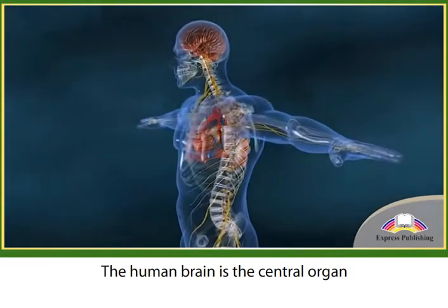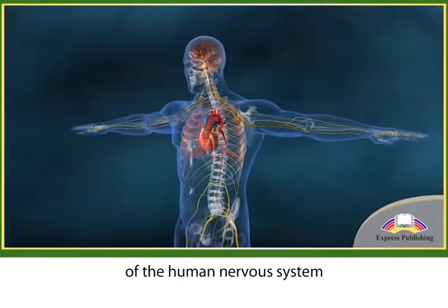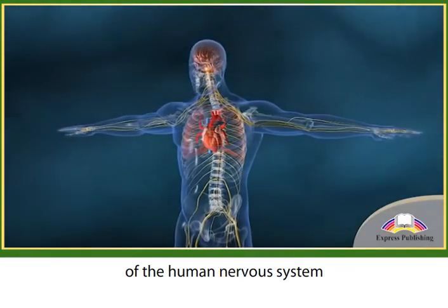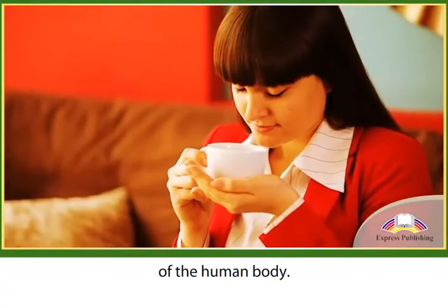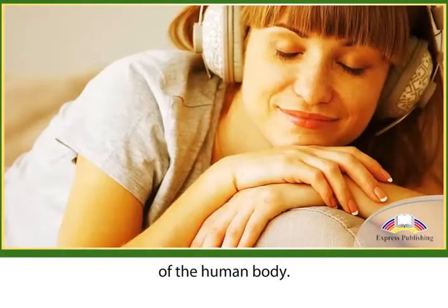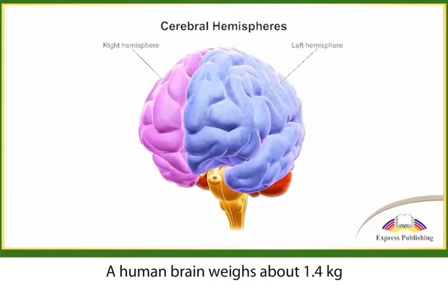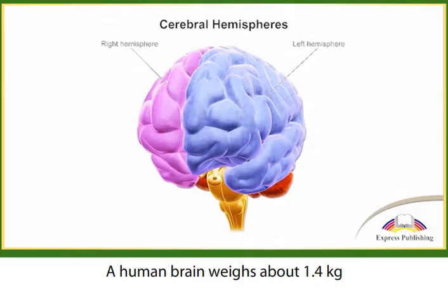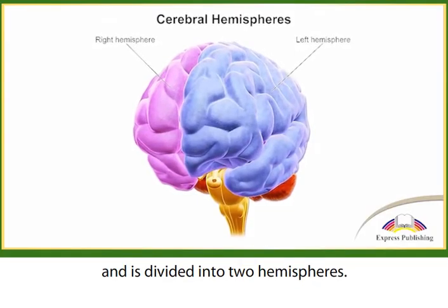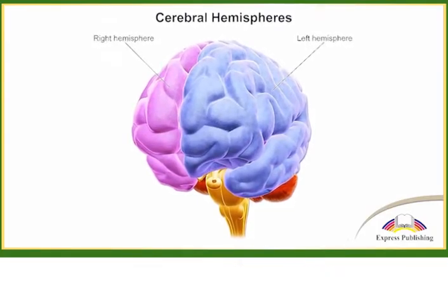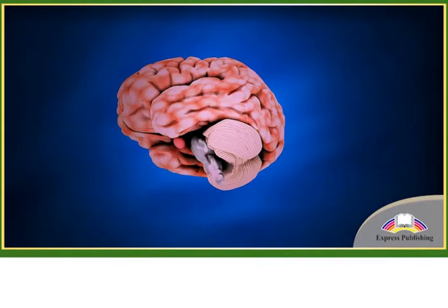The human brain is the central organ of the human nervous system and it controls most of the activities of the human body. A human brain weighs about 1.4 kilograms and is divided into two hemispheres. The brain consists of three main parts: